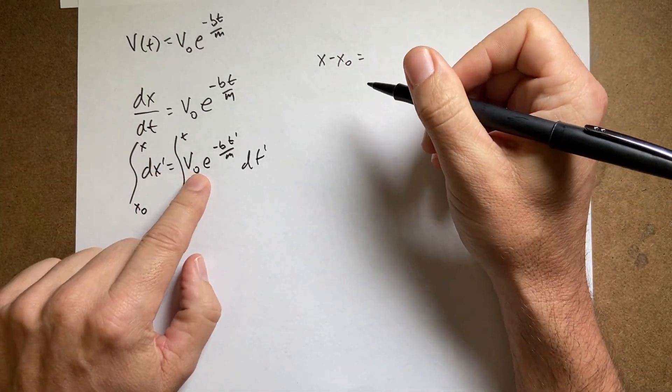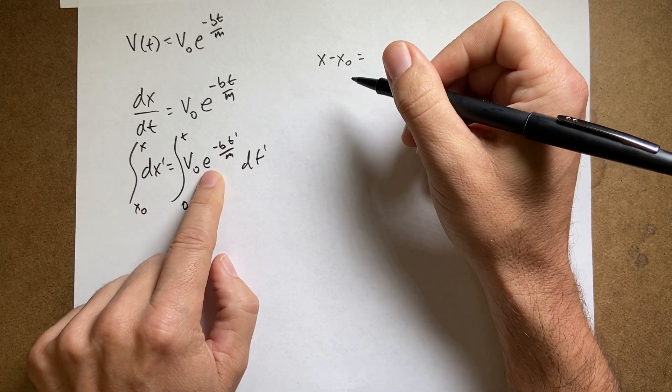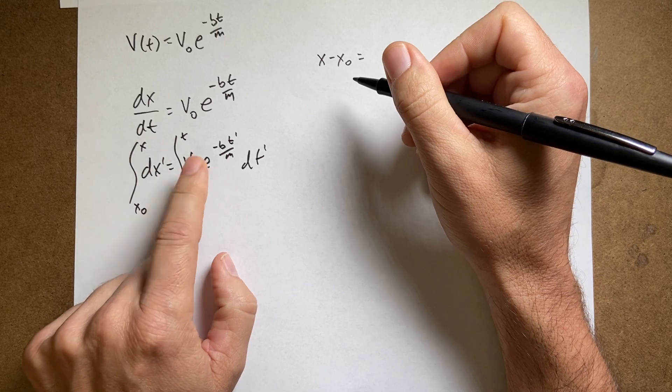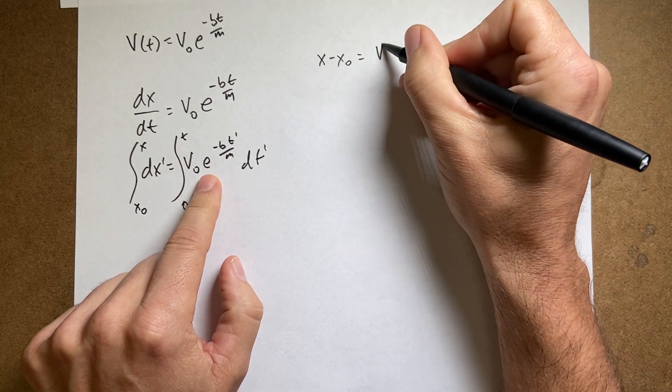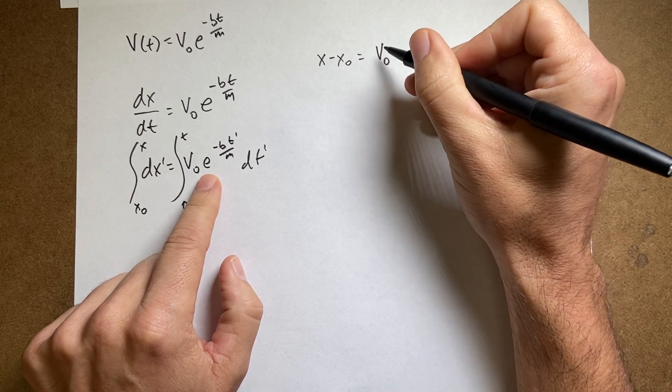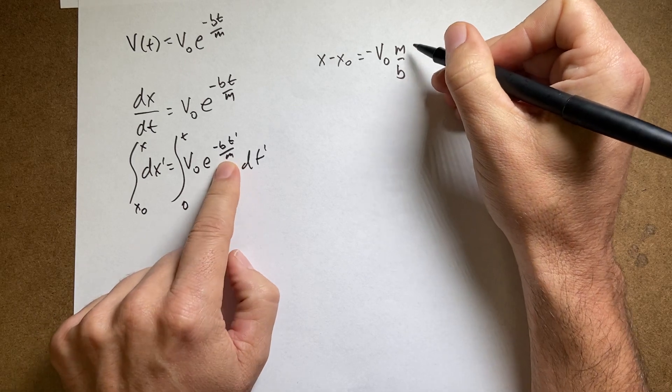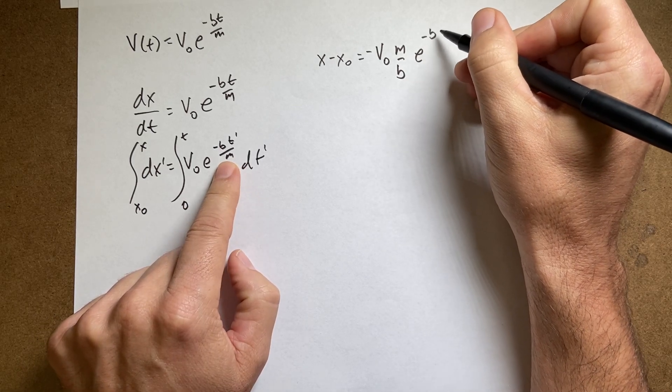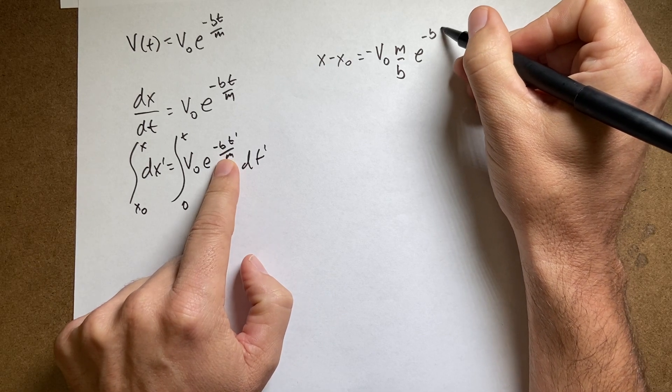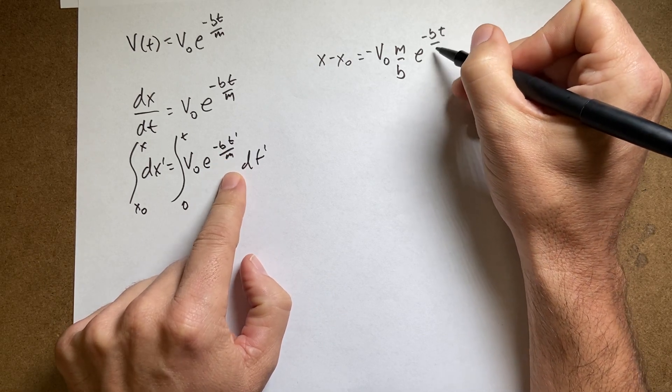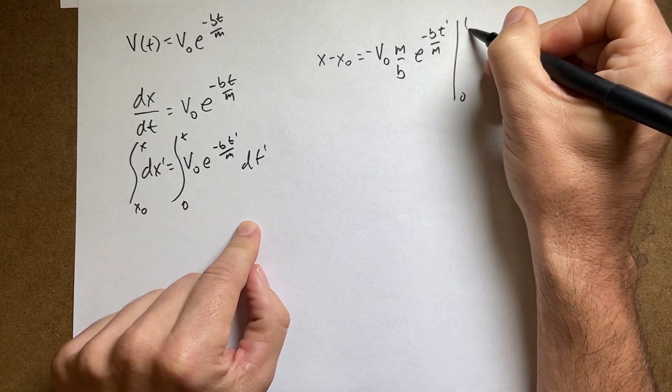On this side, I need to integrate this function. So if I integrate, what do I have to integrate? What do I take the derivative of to get this? Well, it would be V0 and then I'd get negative M over B and then I get the same function, E to the negative B, let's write it as T prime right now, over M evaluated at 0 to T.